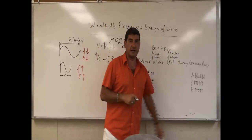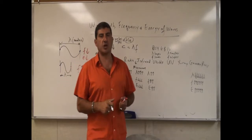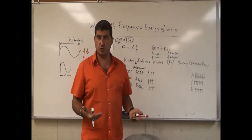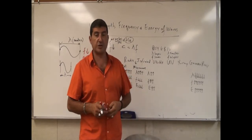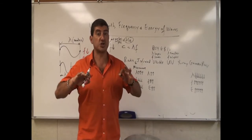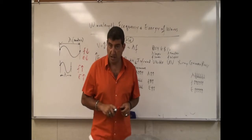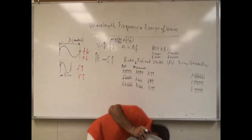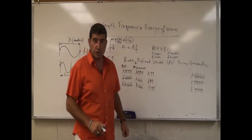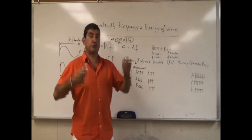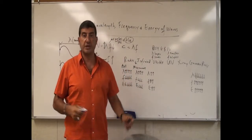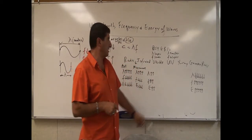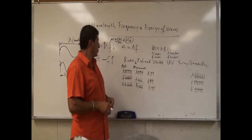Beyond violet you get ultraviolet, which has a smaller wavelength, higher frequency, and more energy than violet — making it dangerous. Too much UV exposure changes the pigment of your skin and can cause cancer by altering the genetic makeup of skin cells, mutating them to become cancerous. Similarly, too much X-ray exposure is also dangerous, which is why lead shielding is used during X-rays. All of these higher-energy waves are considered dangerous waves.